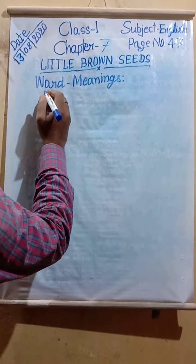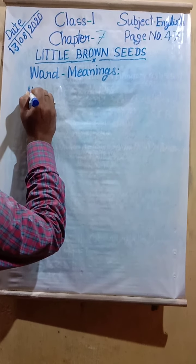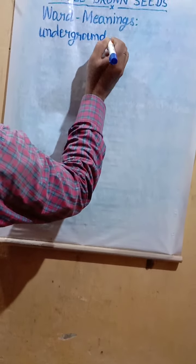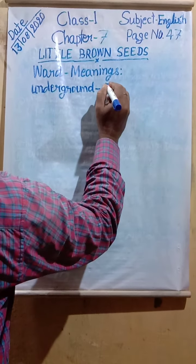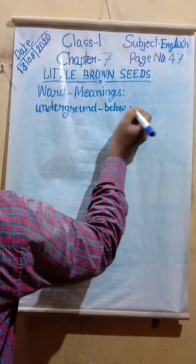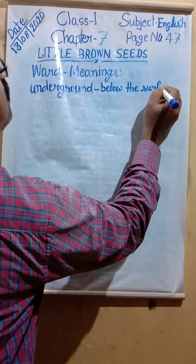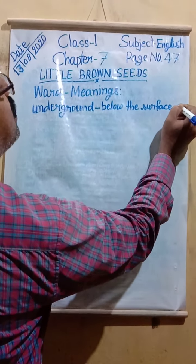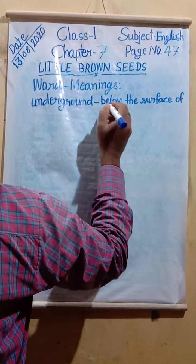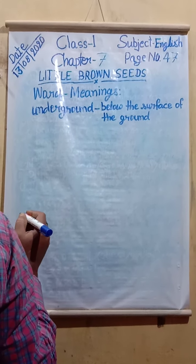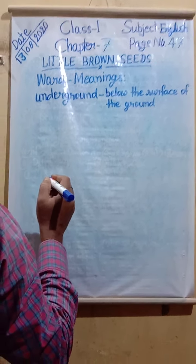Today we will write the word meanings of this chapter. First, 'underground' means below the surface of the ground.